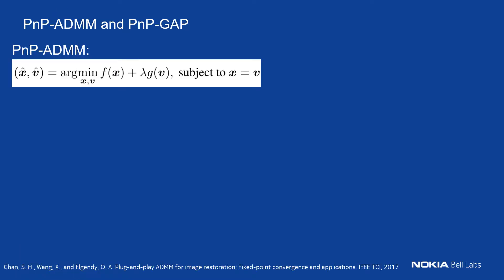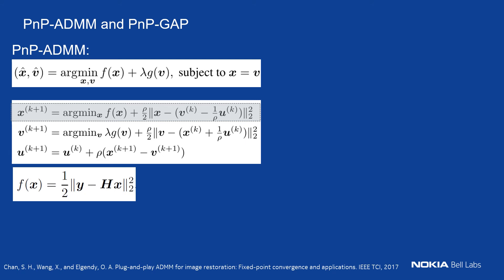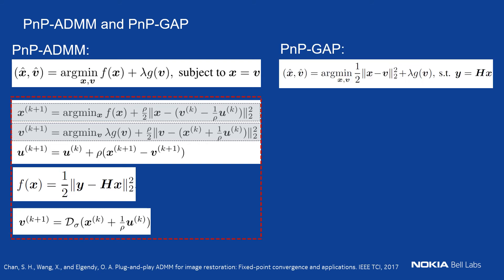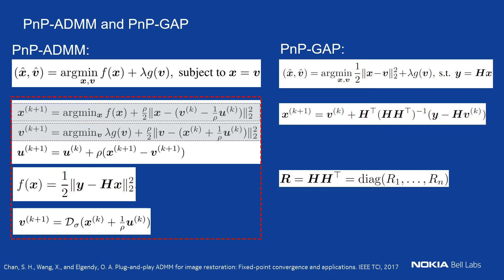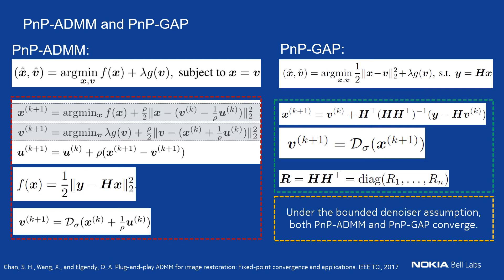PnP-ADMM follows the standard ADMM framework and has three different steps. Using the pre-trained denoising network into the L2 loss function gives very fast results. For PnP-GAP — Generalized Alternating Projection — there are only two steps instead of three as in ADMM. The H-transpose inverse simplifies to a diagonal matrix, making it very easy to compute, which is why PnP-GAP is actually faster than ADMM. Under the bounded denoiser assumption, both ADMM and PnP-GAP are proven to converge.